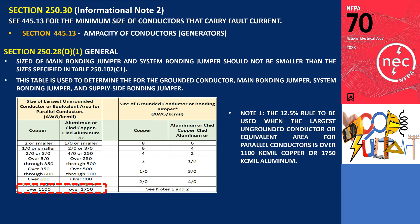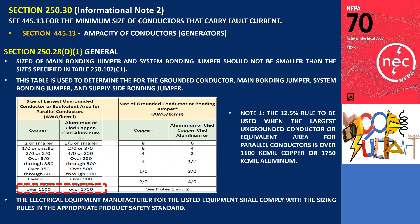Furthermore, a main bonding jumper furnished as part of listed service equipment can also be used as the system bonding jumper for separately derived systems, without the need for any additional calculations, as discussed in 250.28.